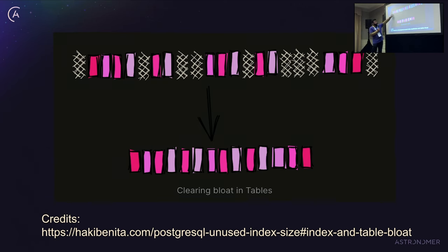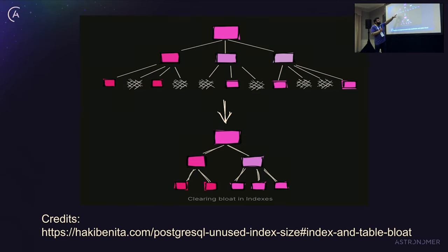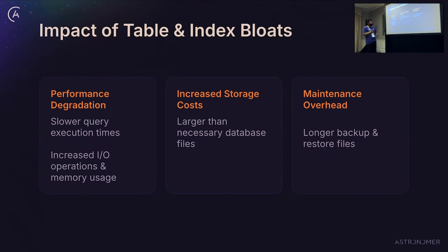This is how it looks — consider an array of pages. There's a really nice referenced blog article that helped a lot; you might want to take a picture of it. This is how you would clear bloats in tables — a quick visual of how bloated data gets removed. Similarly, indexes are represented as a B-tree: a bloated leaf node remains but can't be used; a new leaf node would be added after clearing the bloats. The impact is of course performance degradation, increased storage cost, and if you have backups and restores in place, those will also take significantly longer.